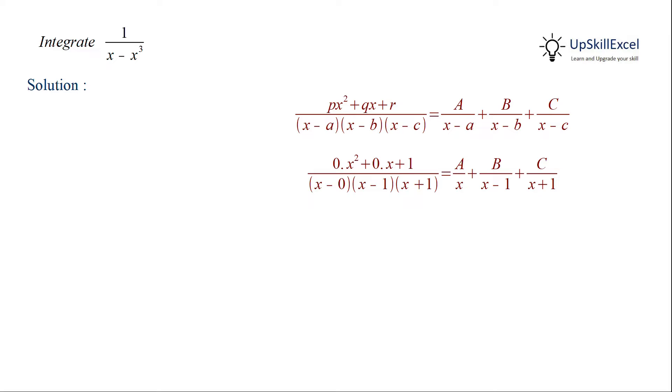One method is to equate the coefficients of power of x and then solve the simultaneous equation to get a, b and c. The other way is to manipulate the numerator to get the partial fraction.